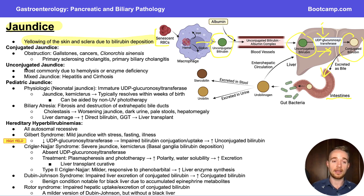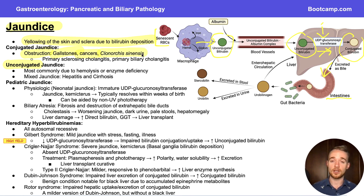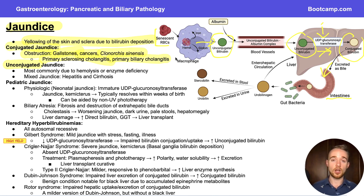Our high conjugated jaundices are largely going to come from obstruction, while mixed or predominantly unconjugated jaundice mostly won't come from obstruction of the biliary tree. Our main forms of obstruction causing conjugated jaundice are going to be gallstones; cancers such as pancreatic adenocarcinoma and cholangiocarcinoma; the liver fluke Clonorchis sinensis, which hides in the biliary tree; and primary sclerosing cholangitis and primary biliary cholangitis, which also obstruct the biliary tree and cause a predominant rise in conjugated bilirubin.